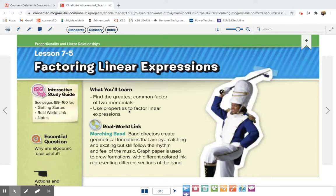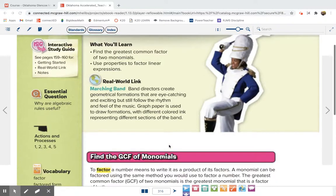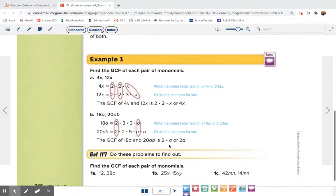Lesson 7-5. This is factoring linear expressions. So we've already added and subtracted them. Now we're going to look at factoring them. So the first problem we're going to talk about, we are finding the GCF. That means the greatest common factor of each pair of numbers or monomials.